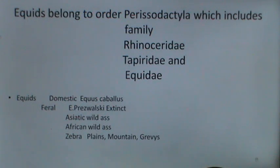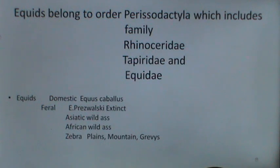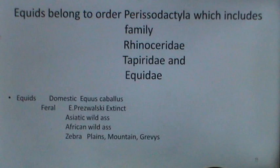There are two types of equids: the domestic and the feral. The domestic equids include Equus caballus, the domestic horse, and Equus przewalskii, which is now considered to be extinct. There was a time when it was present in the Australian continent. Equids also include the Asiatic wild ass, the African wild ass, the plains zebra, the mountain zebra, and Grevy's zebra.